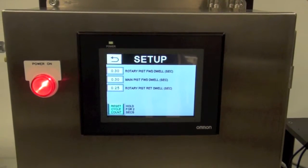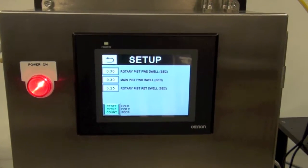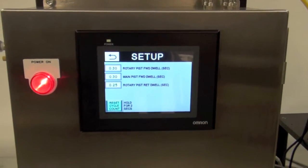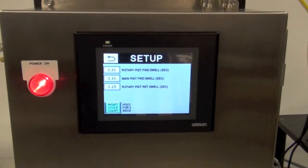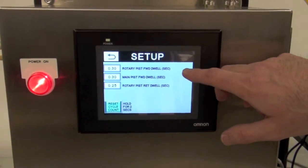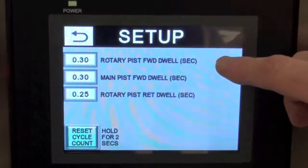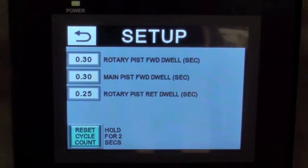You might need to adjust these settings to either increase your time or slow it down to allow for the best settings for your product. The top here indicates the rotary piston forward dwell time.